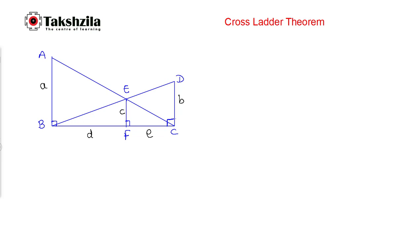In this diagram, AB, EF, and CD are three lines perpendicular to line BC. The length of AB is small a, the length of EF is small c, and the length of DC is small b.